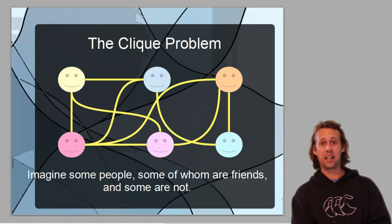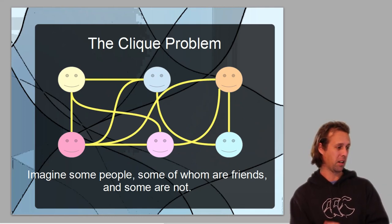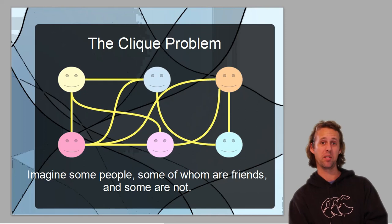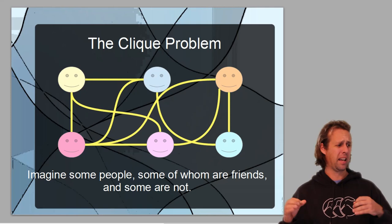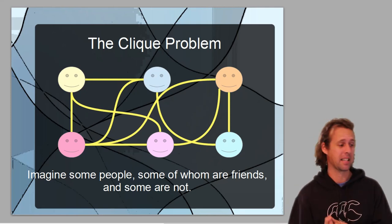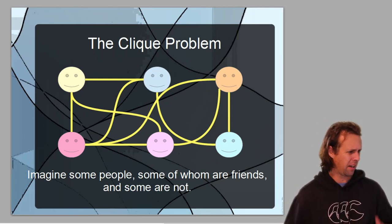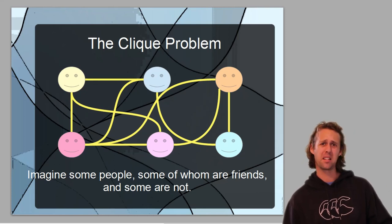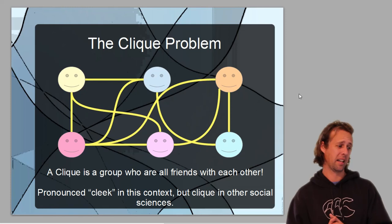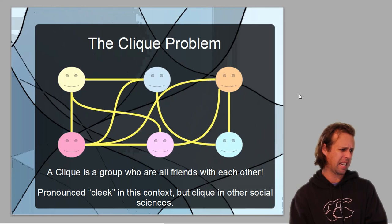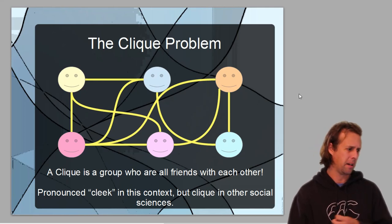These questions are called the clique problem. If you imagine there's a collection of people, some of whom are friends and some of whom are not, or in other words, if there's just a bunch of nodes and some of the nodes are connected and some of them are not, then you'll have something like what we've got here on the screen. We've got a bunch of little faces and the lines indicate connections.